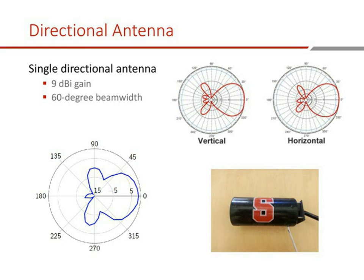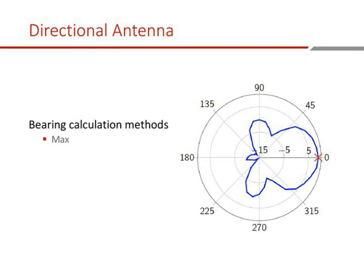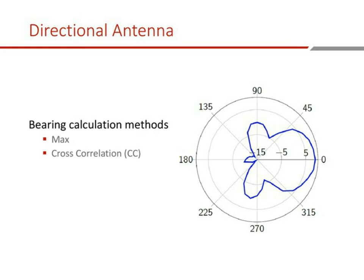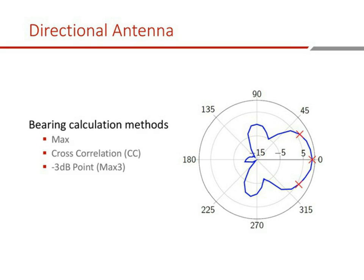Every measurement we make will have these gain patterns, so we need to tease out the bearing from the pattern. We examined three different methods: first, simply looking at the maximum point along the curve as the bearing; second, cross-correlation, where we match our experimental gain pattern to a known truth by rotating until they align; and third, MAX3, an improvement where we find the minus-3 dB points where the main lobe tapers off, take their midpoint, and call that the bearing — intended to smooth out imperfections.